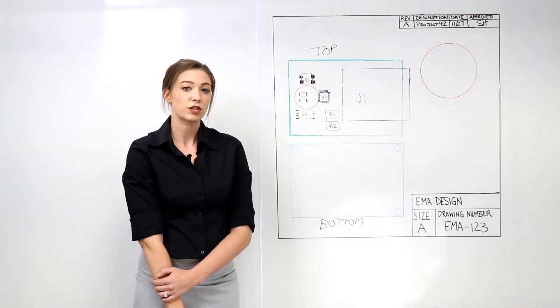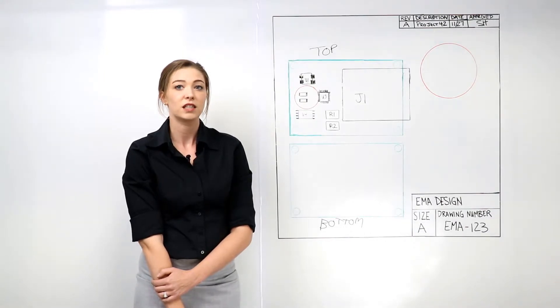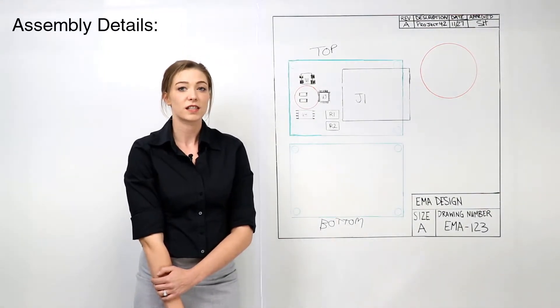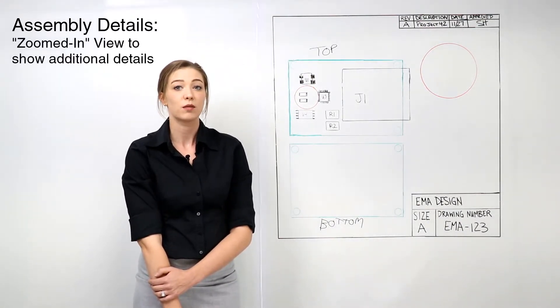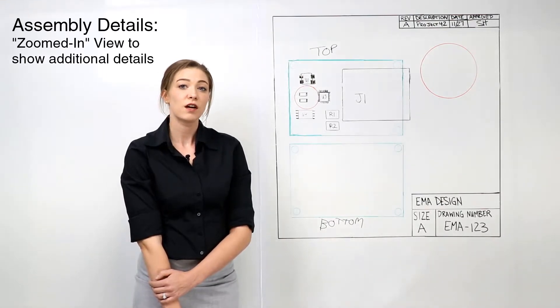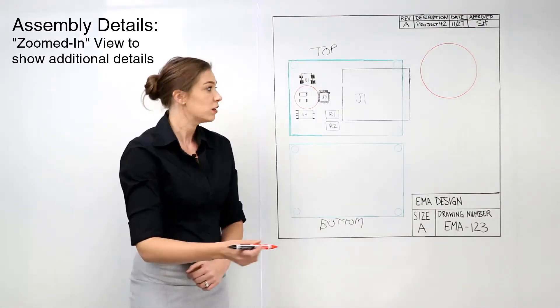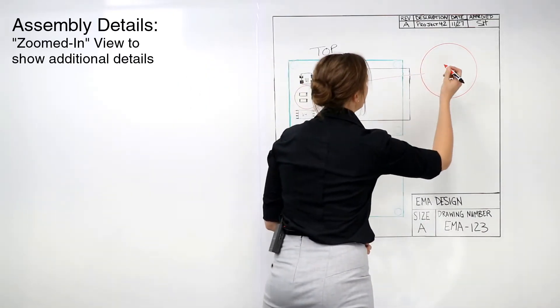Once a pictorial is created, the assembly details may need to be added to the drawing. Assembly details are necessary when not enough information is visible on the main pictorial. This is often the case for densely populated boards. If there is not enough room for reference designators to be printed on the board, they should be documented in the assembly detail.